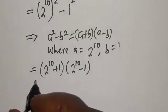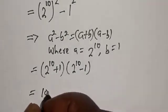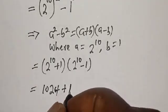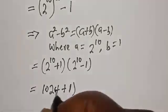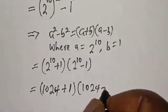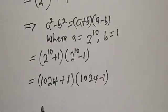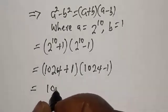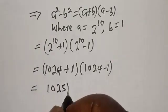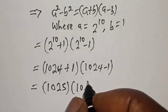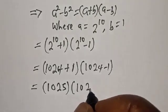2^10 is 1024, so we have (1024 + 1)(1024 - 1). 1024 plus 1 is 1025. This is 1025 multiplied by 1023.